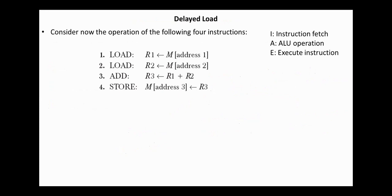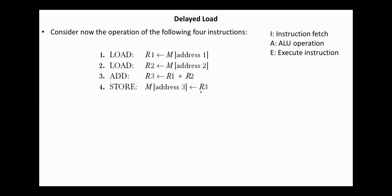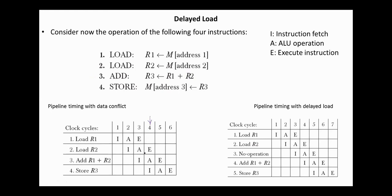Next, delayed load. Consider four instructions: load memory location addressed by address 1 into register R1; then add the contents of registers R1 and R2 and place the result in R3; then store the result in R3 to memory location addressed by address 3. There is a data conflict: in the add instruction, the value in register R2 is not yet available in the A segment. As seen from the timing diagram, the E segment in clock cycle 4 is in the process of placing the memory data into register R2, while the A segment in clock cycle 4 is already using the data from register R2.